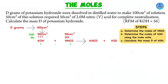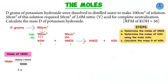Starting with the moles of nitric acid — we know its volume and its molarity, so we use the formula: moles equals molarity multiplied by volume over 1000. Our molarity is 2 multiplied by volume 50 over 1000, giving us the number of moles of nitric acid as 0.1.